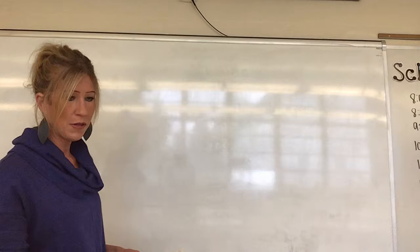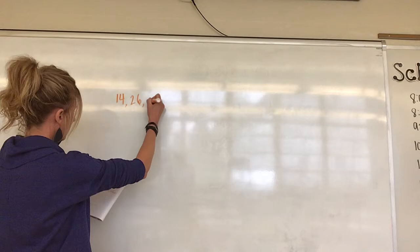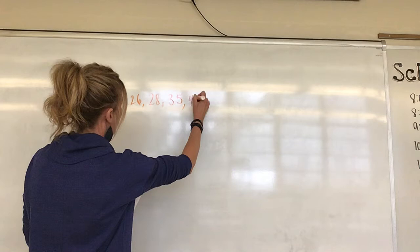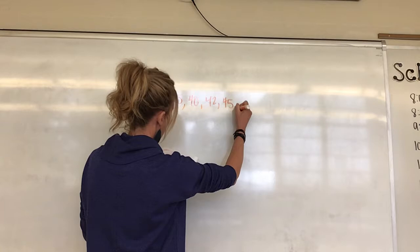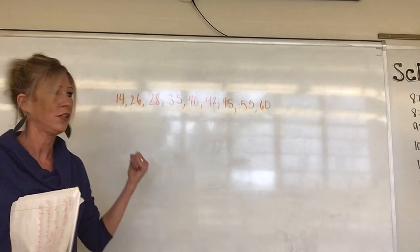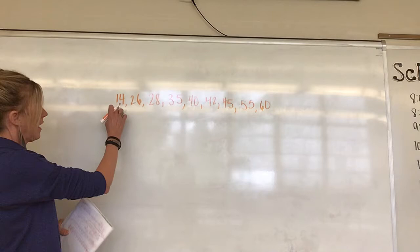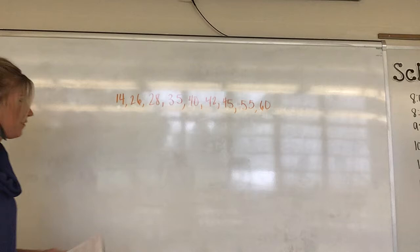Let's order that data. We counted up nine pieces of data. Here's the order: there was a haircut for 14, 26, 28, 35, 40, 42, 45, 55, and 60. Let's make sure we have nine — one, two, three, four, five, six, seven, eight, nine. Good, we don't want to miss any pieces of data.